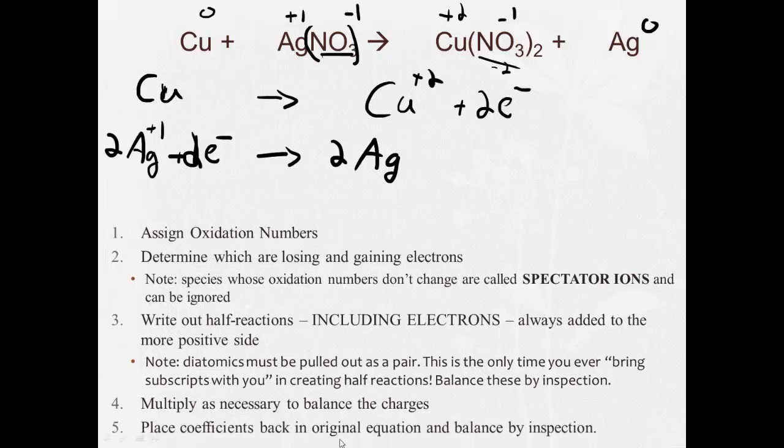Next, I will place the coefficients back in the original equation and then balance by inspection. So now, if I put a two in front of my silver and a two in front of my silver, now I'm balanced. One copper, one copper, two silver, two silver, two nitrates, two nitrates. So now this is balanced. However, I need to decide which is oxidation and which is reduction. Well, I have to remember, oxidation is losing. So which one is losing electrons? Well, copper gives up two electrons. So this is my oxidation reaction. Reduction is gaining. Since this silver plus one is gaining electrons, it is reduction. So this is my oxidation, this is my reduction reaction.